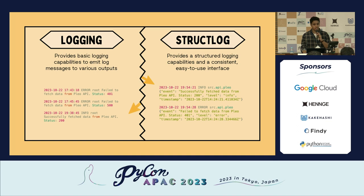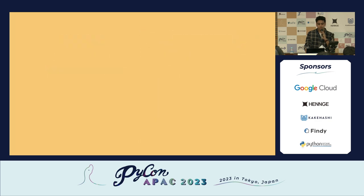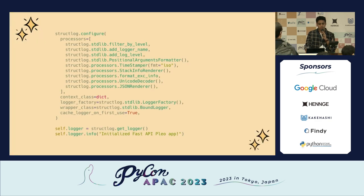One major issue is we don't always want plain lines of logs — we also want structured logs in JSON format. For that, you can use a library called StructLog, which is quite robust in Python and provides structured JSON-formatted logs for your applications.